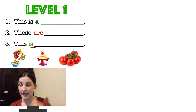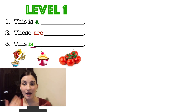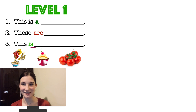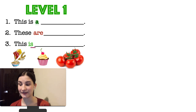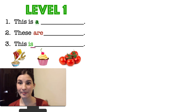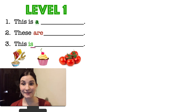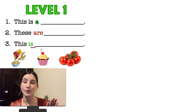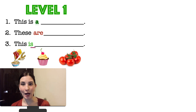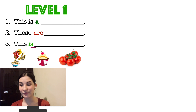What is this? It's a cupcake. Is it countable or uncountable? Of course, it is countable. How many cupcakes can you see? There is only one cupcake. And what is this? These are tomatoes. Are they countable or uncountable? They are countable. How many tomatoes can you see in the picture? There are five tomatoes.